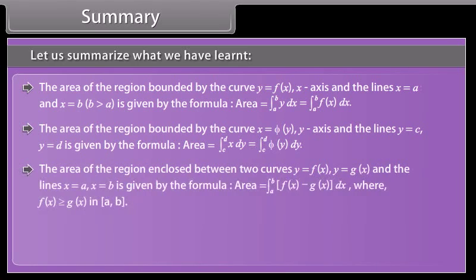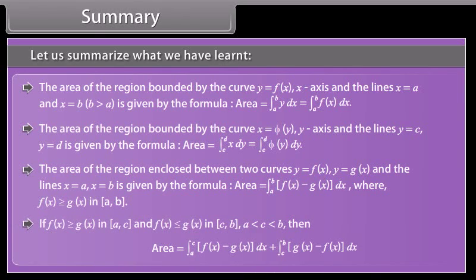The area of the region enclosed between two curves y = f(x) and y = g(x), and the lines x = A and x = B, is given by the formula: if f(x) ≥ g(x) in [A, C] and f(x) ≤ g(x) in [C, B], where A < C < B, then the area can be computed accordingly using the respective integrals over each subinterval.